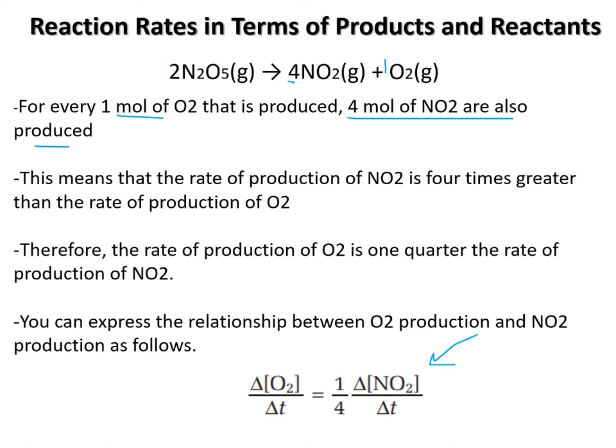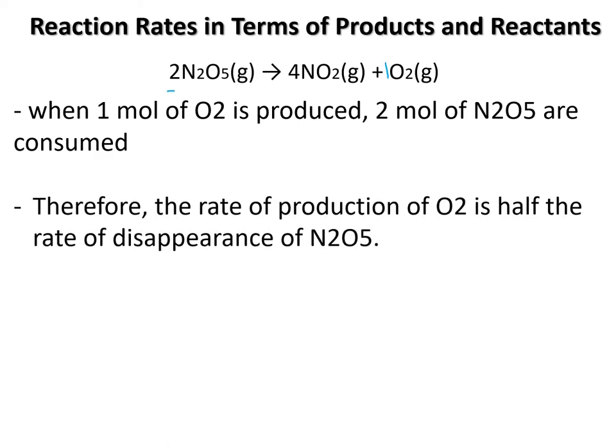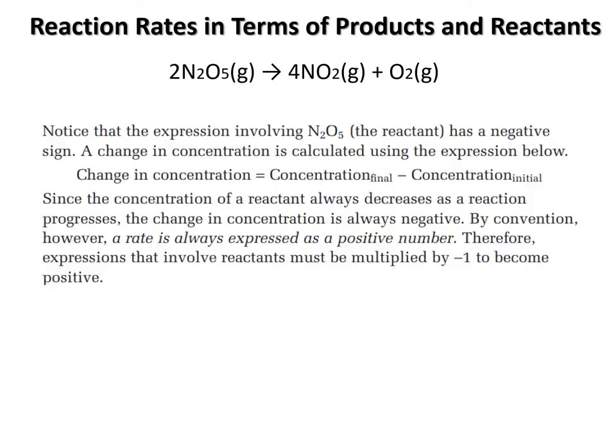Now we can look at the flip side here with our reactant. So we've got one mole of O2 produced from two moles of the N2O5. Comparing those, you see it's half. And then that's going to be our relationship. So you'll notice that we have a negative sign here, because the reactant is what we're talking about, that's what we're comparing. And it's going down.